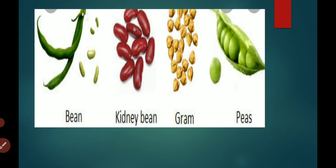We eat seeds of these plants such as vegetables, cereals, and pulses. So, plants and animals are the sources of food. We get food from plants and animals.